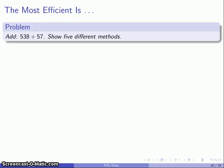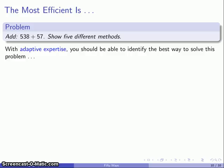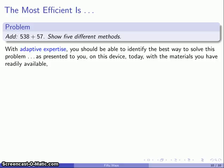And this goes back to the question of adaptive expertise. If you have adaptive expertise, you should be able to look at a problem like this and identify the best way to solve the problem as it's presented to you on this device today with the materials you have readily available under the conditions that you're going to solve it. But, if the problem changes, your best and most efficient method will likely change as well.